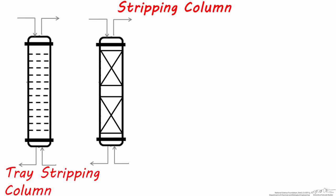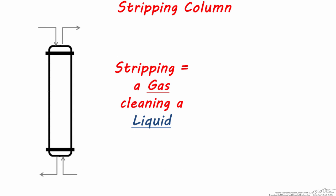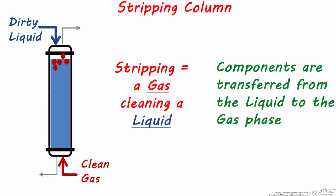Stripping columns can be tray or packed towers. The purpose of a stripping column is to use a gas to clean a liquid. Like absorption, the liquid can be sprayed or pumped and flowed into the column. Clean gas moves up the column while contaminants are transferred to it from the liquid phase. This results in a clean liquid exiting the column at the bottom and the gas with the contaminants leaving from the top. This spent gas is usually vented or further separated.